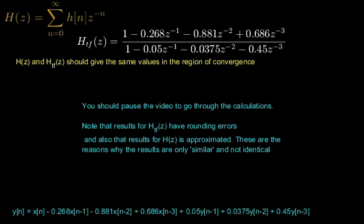Outside of this region, we get values from the transfer function that can, in some ways, be considered incorrect, yet visually I find these values appealing as it helps to visualise how the location of poles and zeros influence the frequency response of a system. In the next video, I'll explain why the intersection of the surface of the magnitude of H with the unit circle is equivalent to the frequency response of a system.